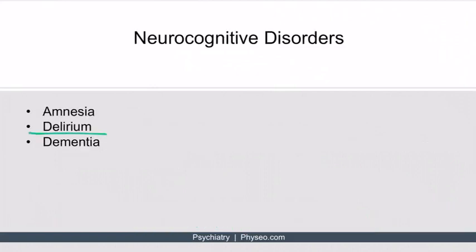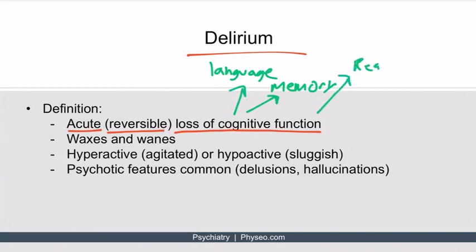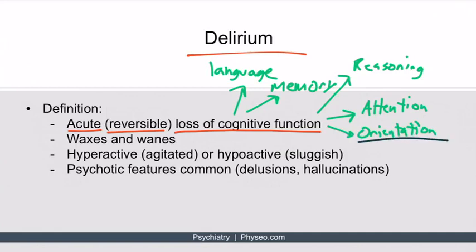Delirium is an acute and reversible loss of cognitive function. Cognitive functions include language, memory, reasoning, attention, and orientation. Delirious patients don't know where they are, can't concentrate on those around them, are unreasonable or illogical, often unintelligible, and almost always struggle to remember anything. Delirium can also have a waxing and waning pattern — you can see a patient return to baseline with all cognitive functions working, but then revert to a delirious state again.